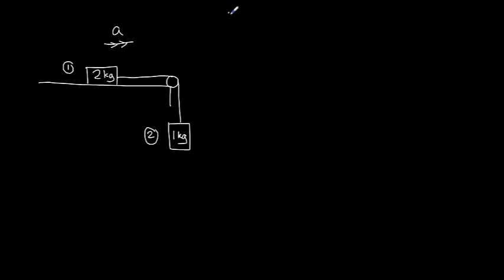So first of all, system one, we have a 2 kilogram mass and it is being accelerated along the desk at a and the only force acting on this block is an unknown tension force pulling it to the right. So we'll label that T.